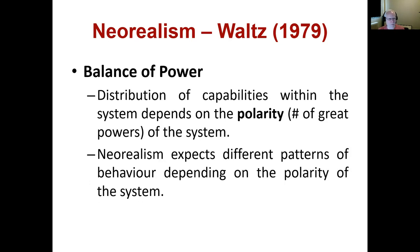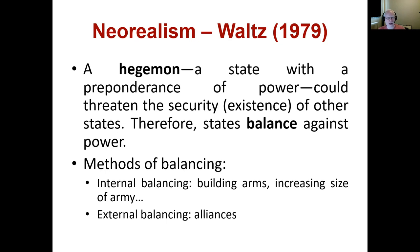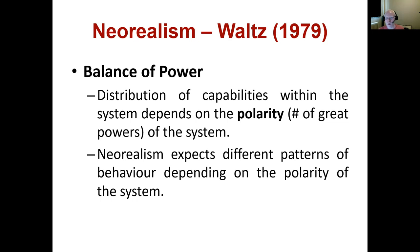It's important to distinguish balance of power from balancing. Balancing is the process of taking actions — building arms or forming alliances — to ensure no state gets a preponderance of power. Balance of power refers to the distribution of capabilities within the system: how many great powers there are and how strong they are. We refer to this distribution as the balance of power within the system.